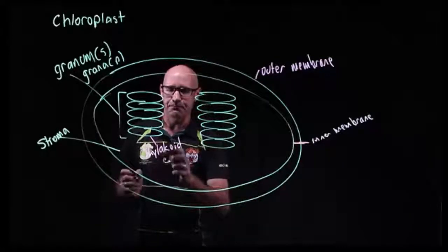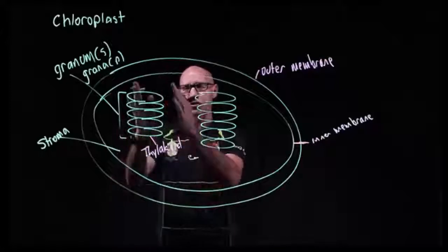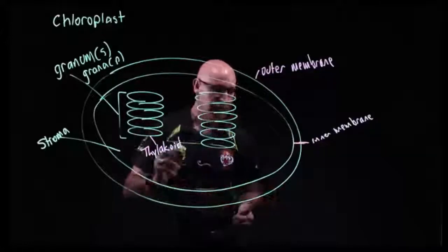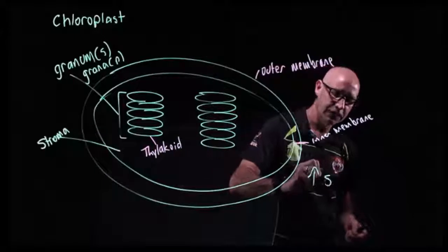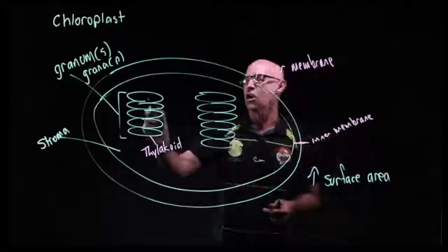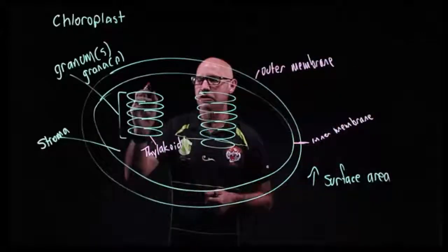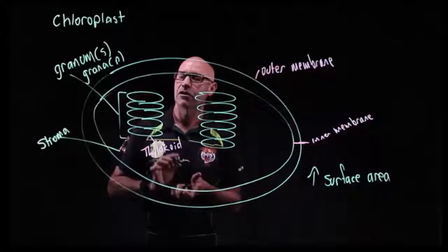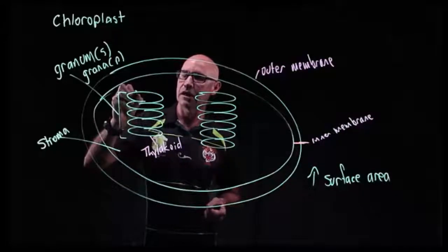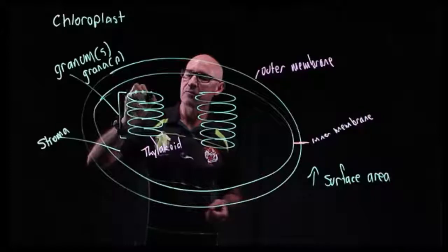Now, the reason why we've got these vertical stacks like this is to increase surface area, because it's along these thylakoids that we have our chlorophyll and our other pigments.